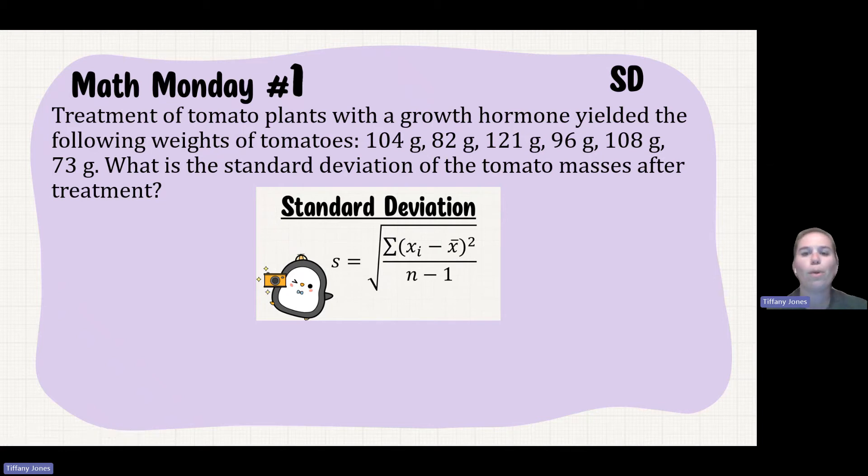So treatment of tomato plants with a growth hormone yielded the following weights in grams: 104, 82, 121, 96, 108, and 73. What is the standard deviation of the tomato masses after treatment? So I know that I have six values, one, two, three, four, five, six, then my n is gonna be equal to six.